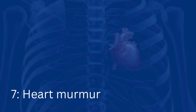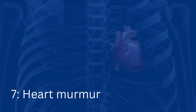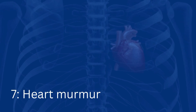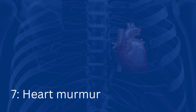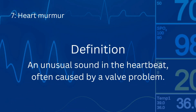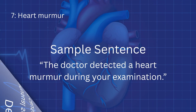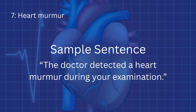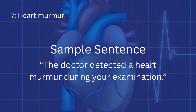Term number seven is heart murmur. A heart murmur is an unusual sound in the heartbeat, often caused by a valve problem. Example phrase: The doctor detected a heart murmur during your examination.